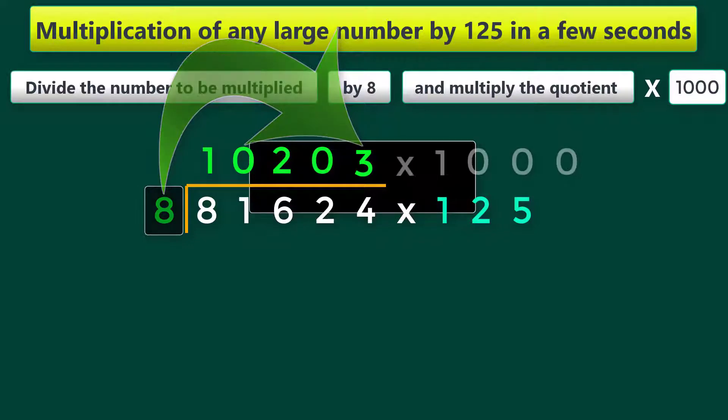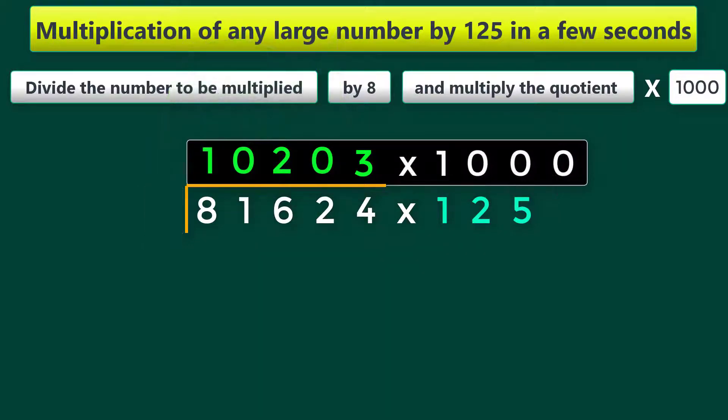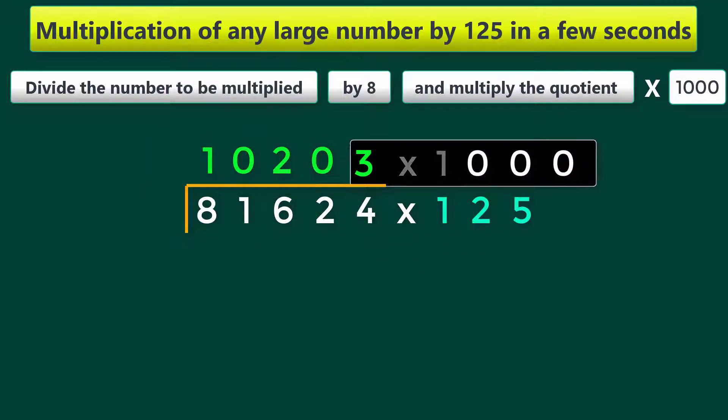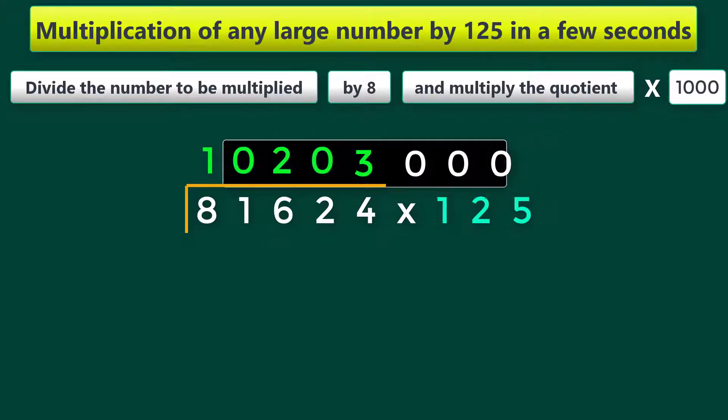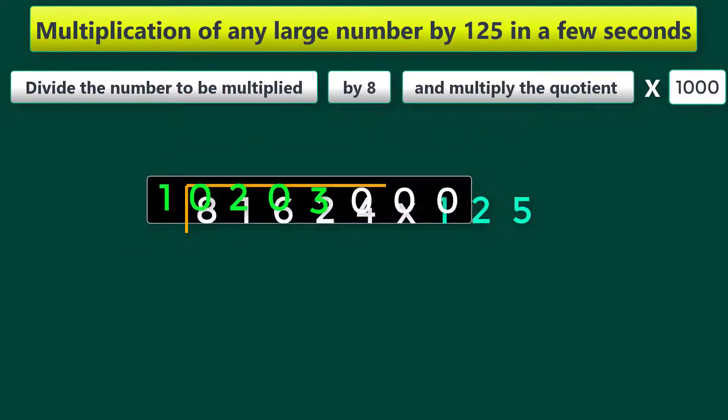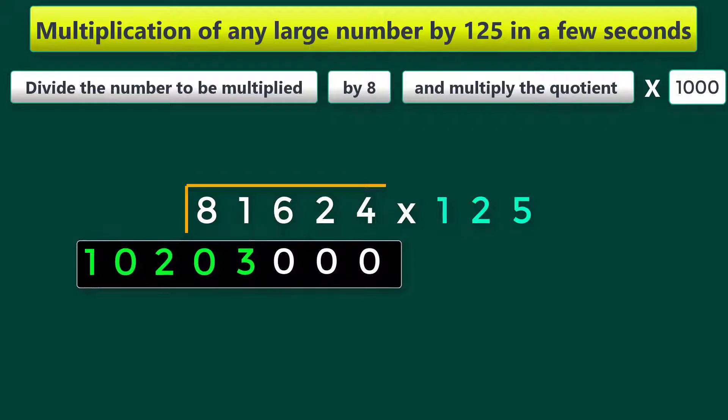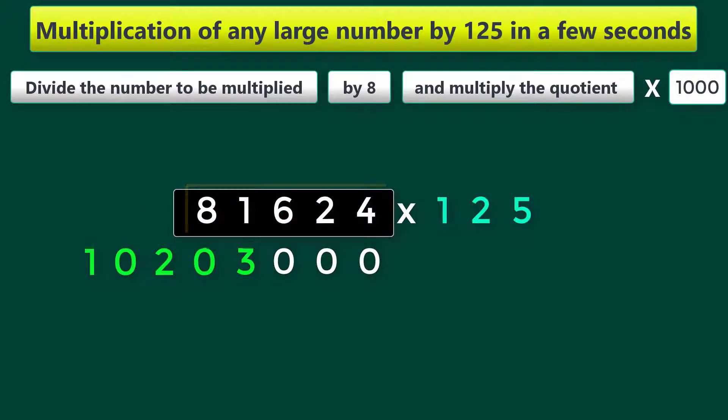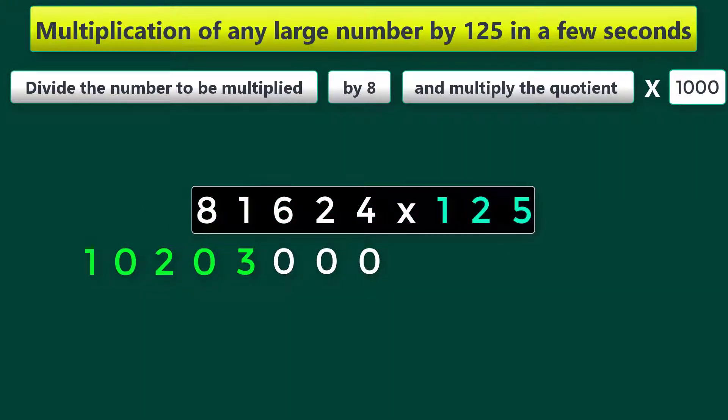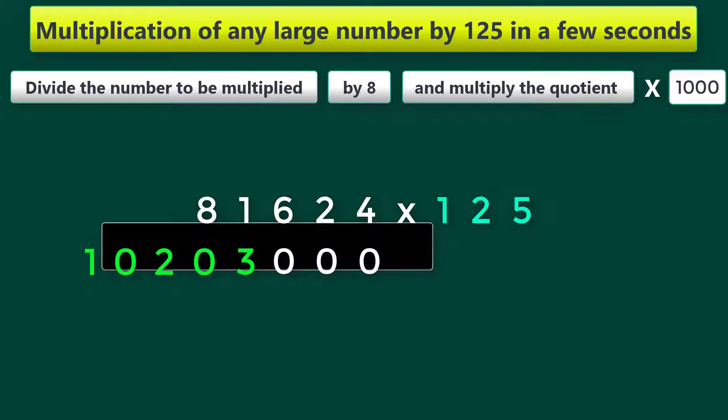Now we have to multiply this quotient by 1000. Instead, just put these three zeros beside this quotient to get 1 crore 2 lakh and 3000. That's all. Even if you multiply this number by 125, you'll get the same answer.